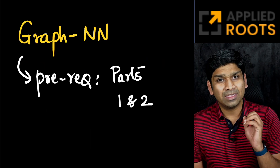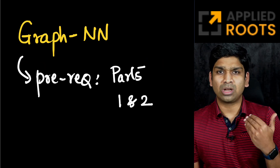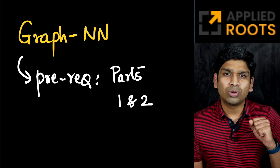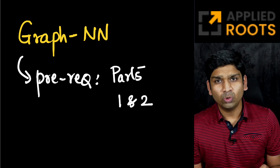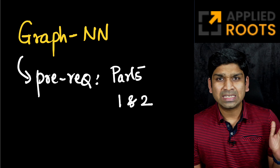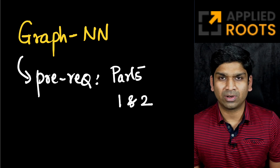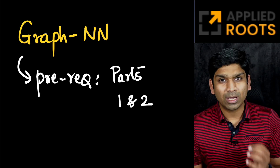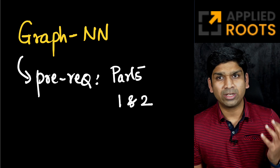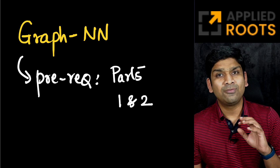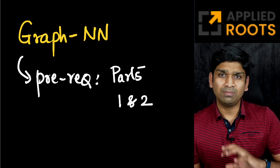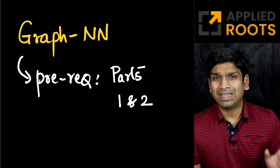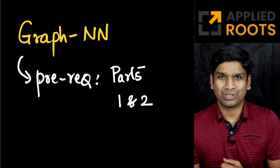The prerequisite to make the most out of this live session is that you should have gone through parts one and two of this series on graph neural networks. If you have gone through them, please do a quick revision. If you have not gone through them, please go through them as soon as you can, so that you can make the most out of the session.